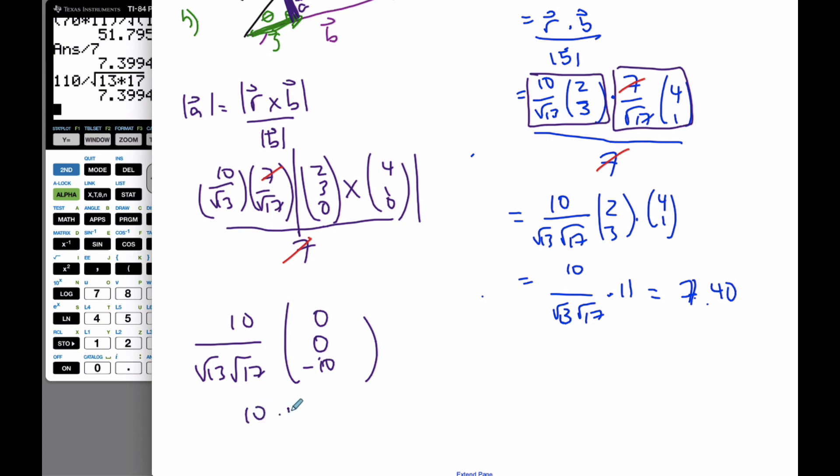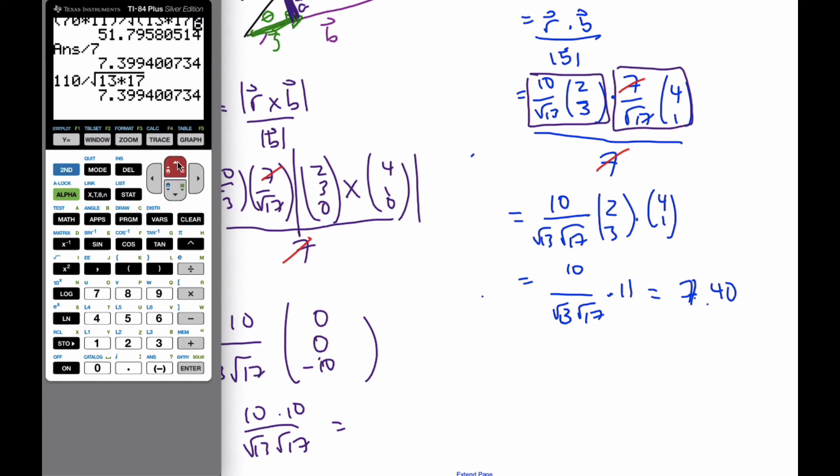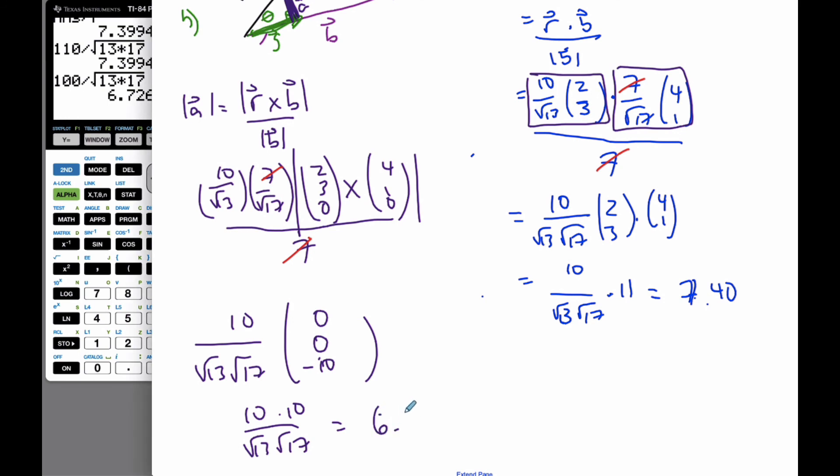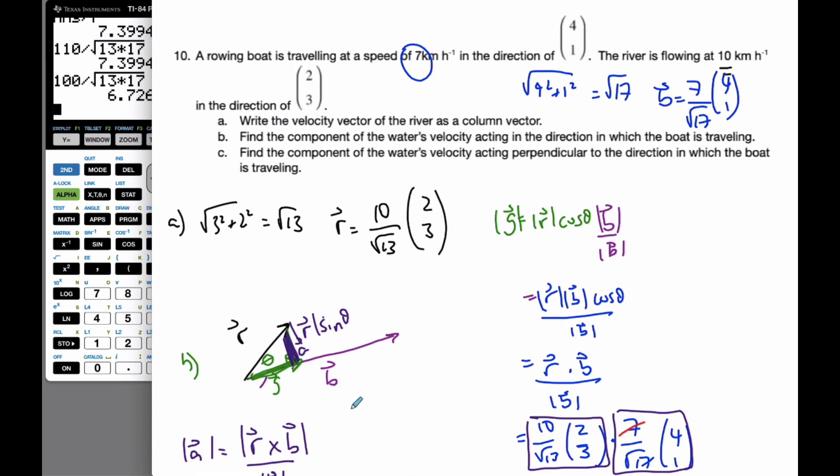So I want the magnitude of this vector. Well, that magnitude is going to be 10 times 10 over root 13 over root 17, which will be, if I come back to my calculator, and I get 100 divided by that, and I end up with 6.73 kilometers per hour. This is what is perpendicular to the river.